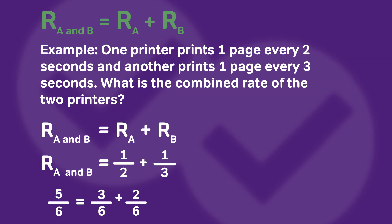The second equation we need to know for work rate is the combined rate equation. That's basically the idea that if we are looking for the rate of two or three or more things working together, all we need to do is add up the rate of each of those things working on their own. So if we have our two printers — the one that prints one page every two seconds and the one that prints one page every three seconds — and we want to find their rate working together, we'll add up those two rates: one half plus one third. Finding a common denominator, we get three over six plus two over six equals five over six. So those printers working together are going to print five pages every six seconds.